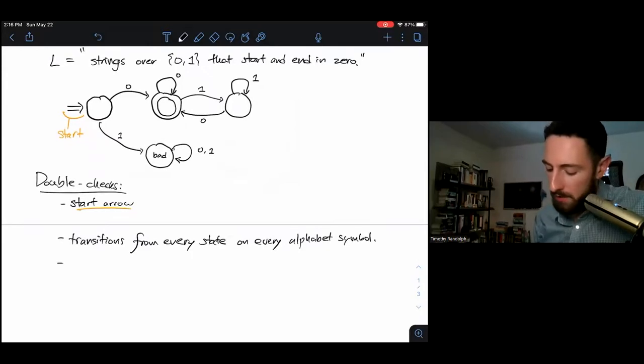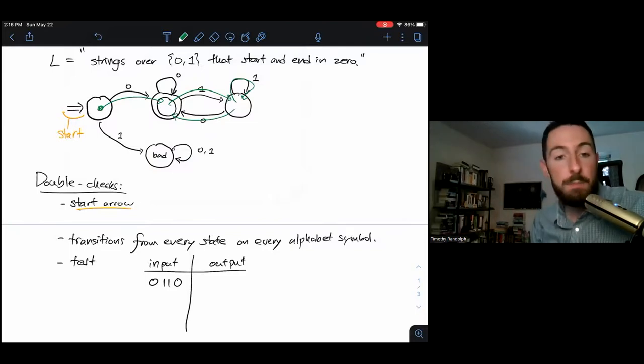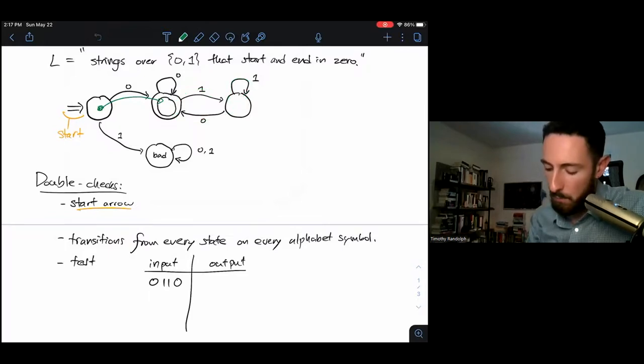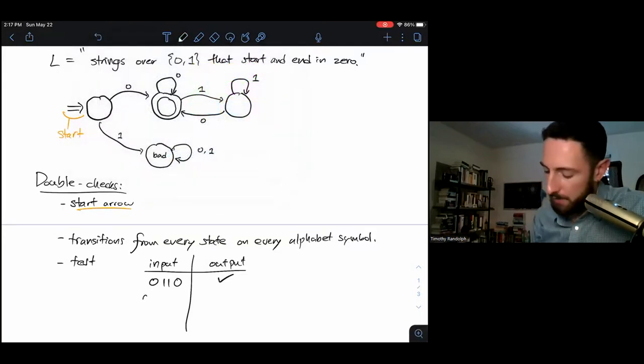If I want to make sure that my state diagram does what I think it does, I'm going to want to test it. This is the third thing I should do whenever I draw a DFA - put in some input strings and check what the output is. For example, if I put in 0110, I start here, move to my second state on a 0, third state on a 1, stay in this state on the second one, and move back on the 0. Then I end my computation in an accept state, so that's equivalent to the DFA saying yes, you're good. So yes, it accepts that.